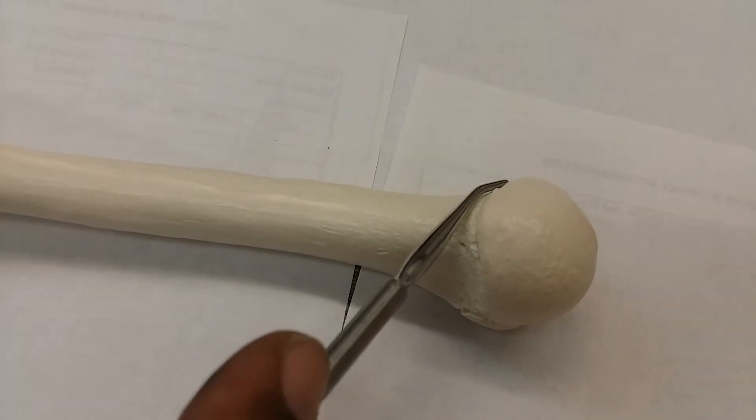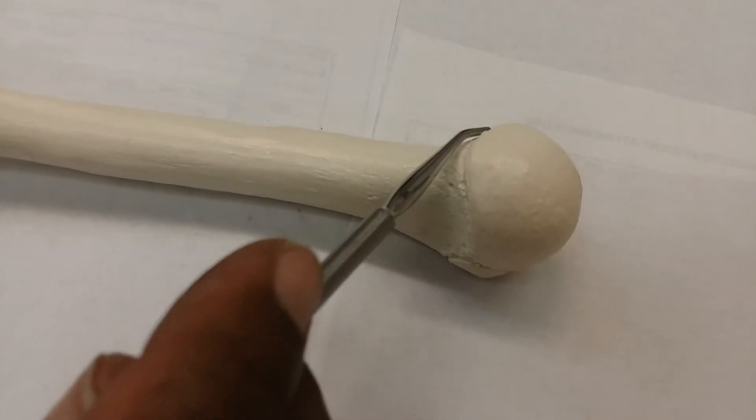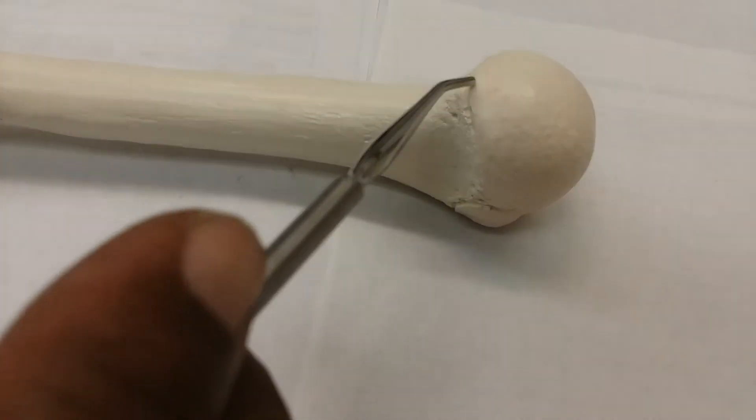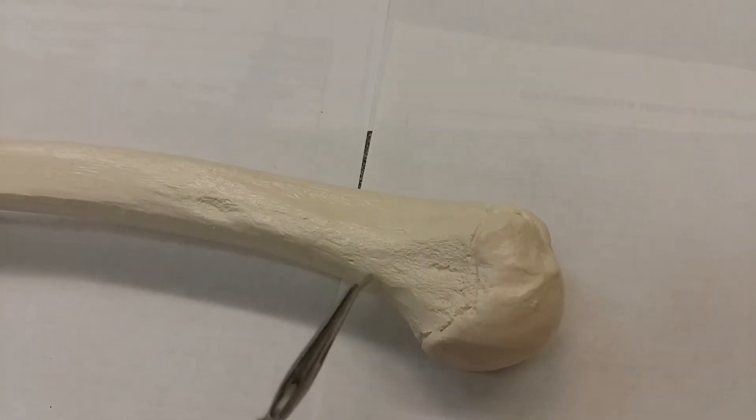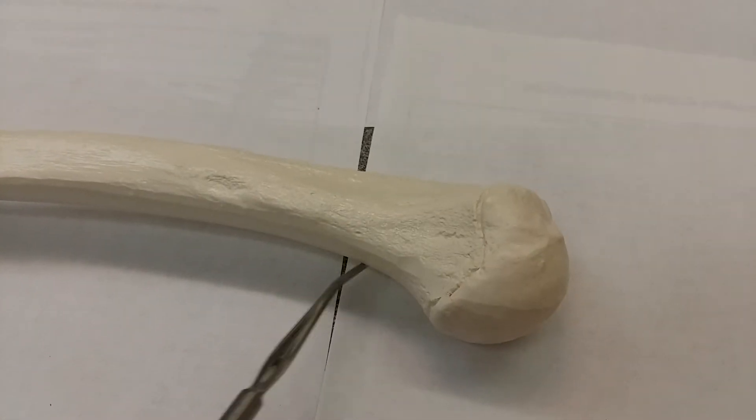This section right here is called the anatomical neck of the humerus. Okay. This portion right here is called the surgical neck of the humerus.